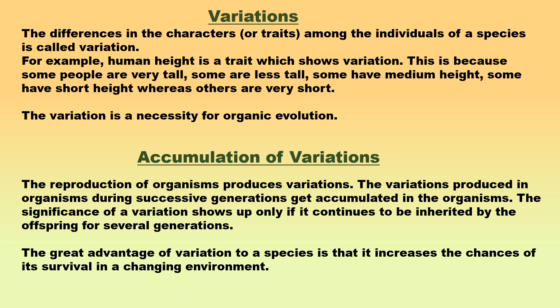Variations: Although the offsprings inherit the characters or traits of the parents and resemble them very closely, the resemblance is not complete in all respects. The offsprings are never a true copy of the parents. In fact, no two individuals are exactly alike, and the members of any one species differ from one another in some characters or traits or the other.